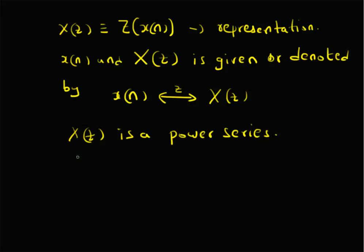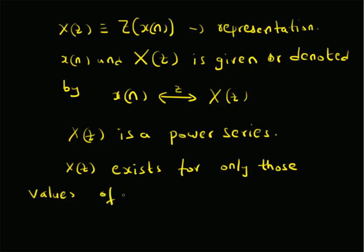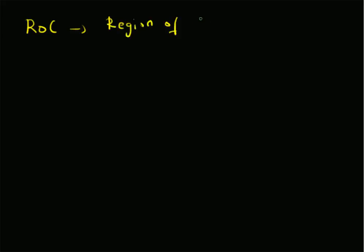X(z) exists only at those values of z for which X(z) converges. So we define what is called the ROC, that is, the region of convergence for X(z).